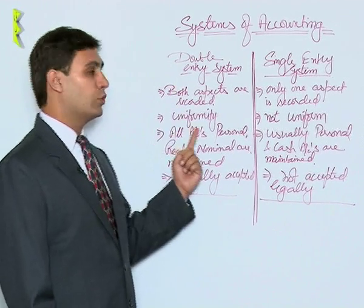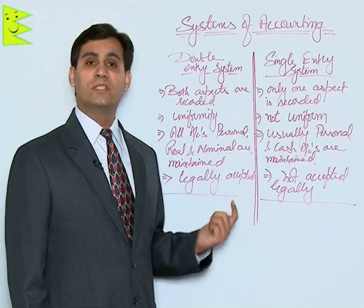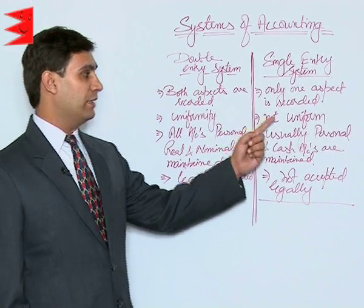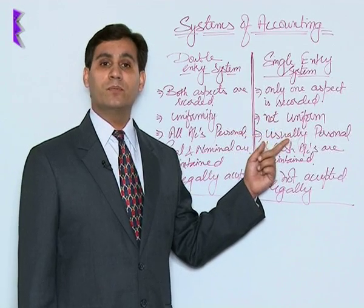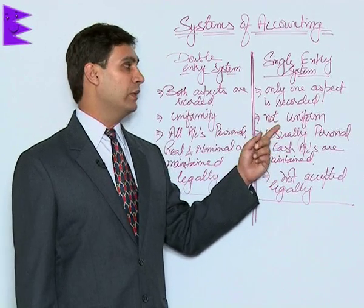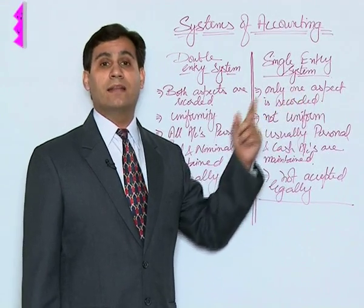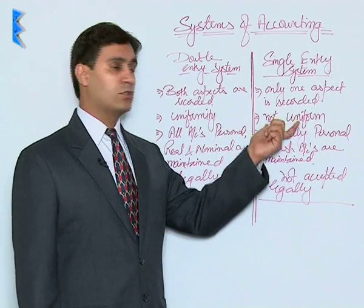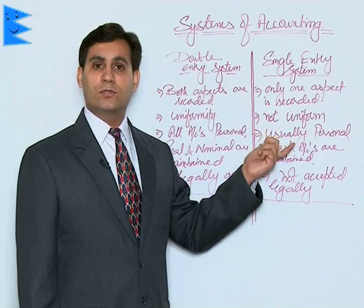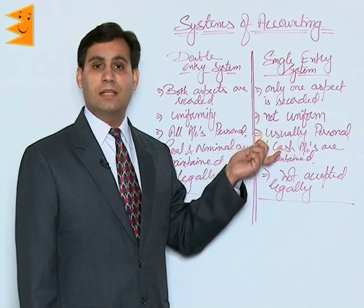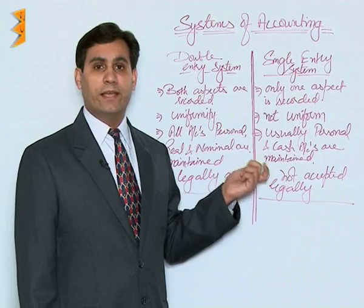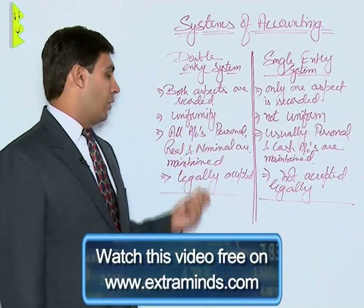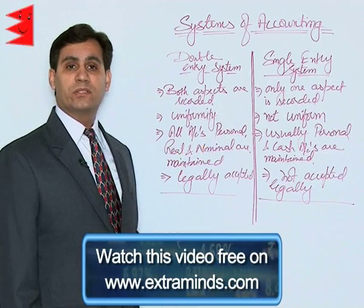Double entry system is uniform — the rules are very clear and are applied uniformly. But single entry system is not a uniform system. In some cases you will record only one aspect, and in some cases both aspects are recorded. Since there is no uniformity, it is quite possible that some discretion on the part of the accountant is involved. In double entry system, all accounts — whether personal, real, or nominal — are recorded in the books of accounts.